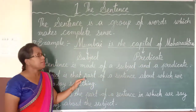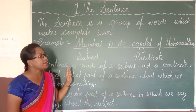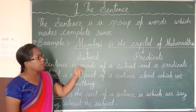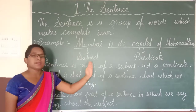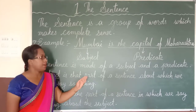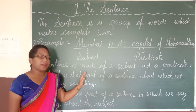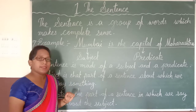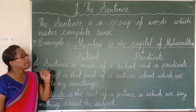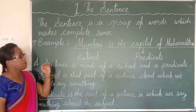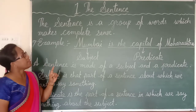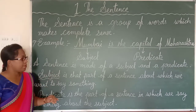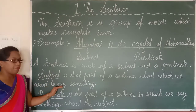Today in this class, we learned what is a sentence. We know what a sentence is, and we understand the sentence. This is the subject and this is the predicate. We know the definition of the sentence: a sentence is a group of words which makes complete sense, along with the subject and predicate definition.